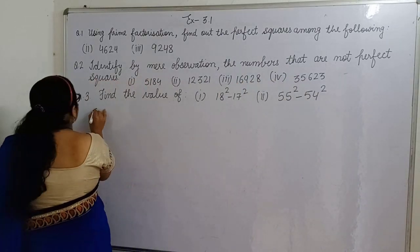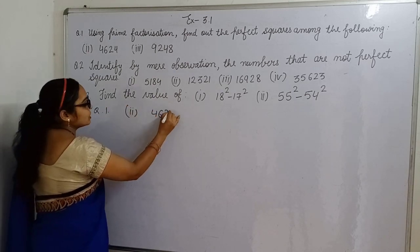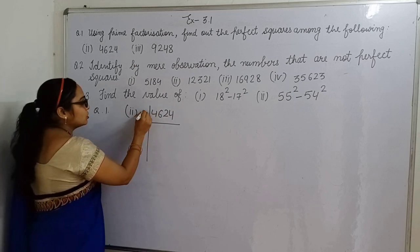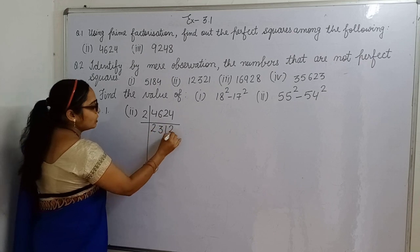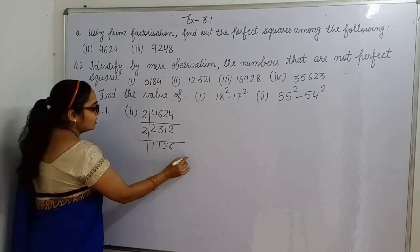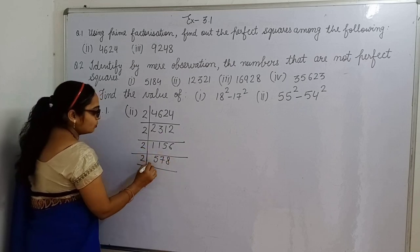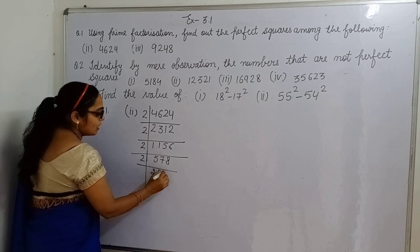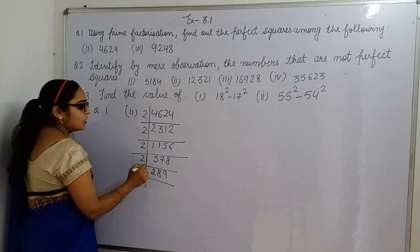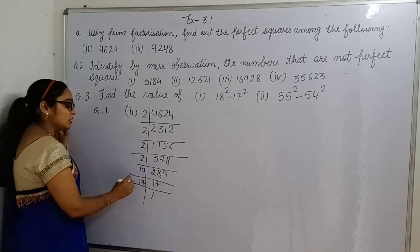So let's take question first, second part. What is in second part? 4624. Now do its prime factorization: 2, 2312, 1156, 578, 289. Now 289 is divisible by 17, 17.